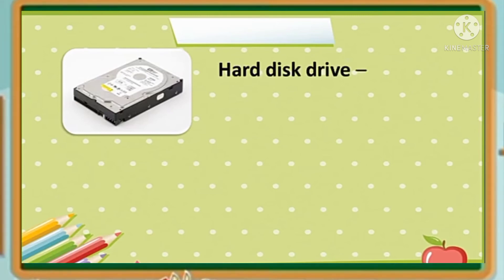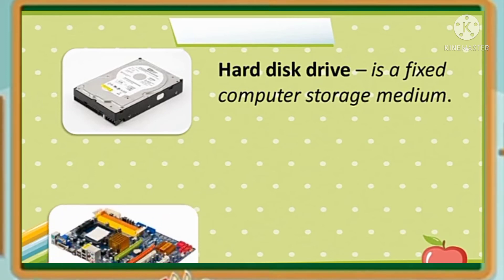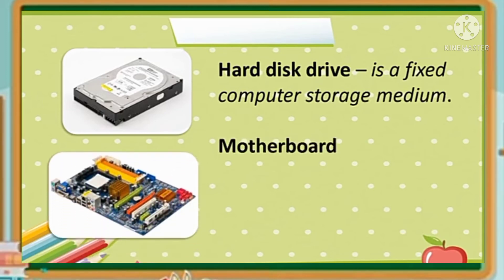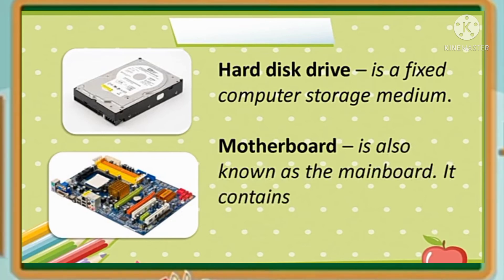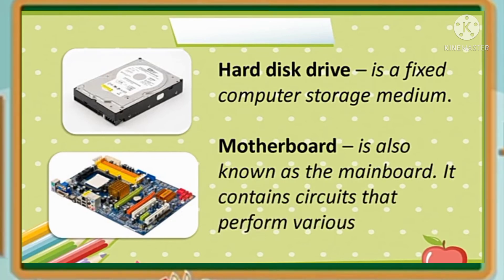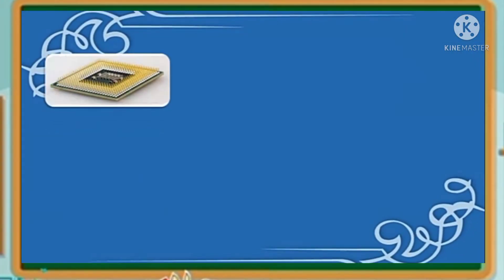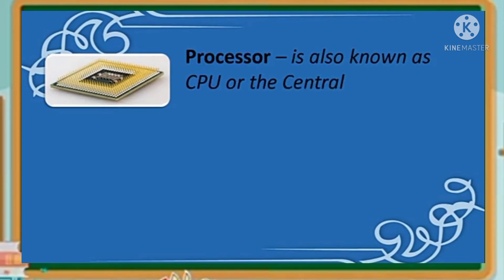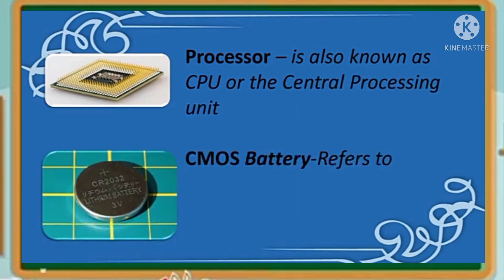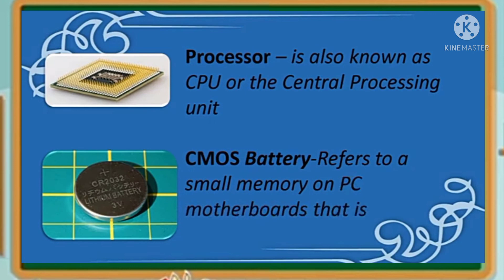The hard disk drive is a fixed computer storage medium. Then the motherboard, also known as the main board, contains circuits that perform various functions. The processor is also known as the CPU, or central processing unit. The CMOS battery refers to a small memory on the PC motherboard that is used to store BIOS settings.